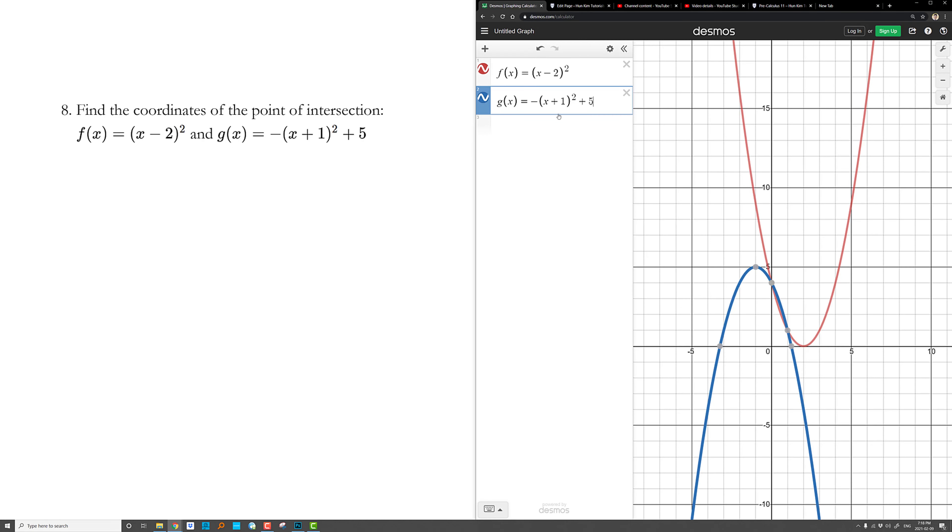If you're allowed to use a graphing calculator such as Desmos, you could just punch it in and see where they hit. So solving the x values, we have 0 and 1. To find the actual coordinates, we need 0, 4 and 1, 1.